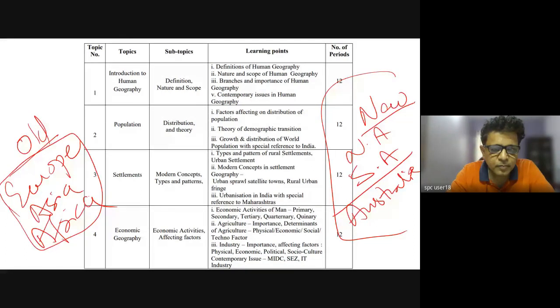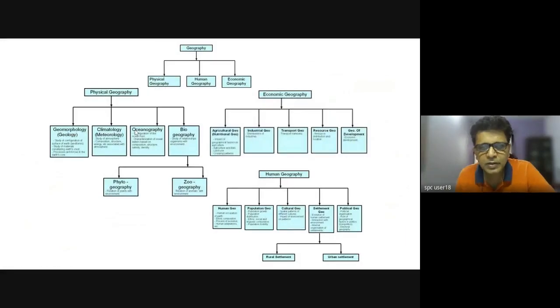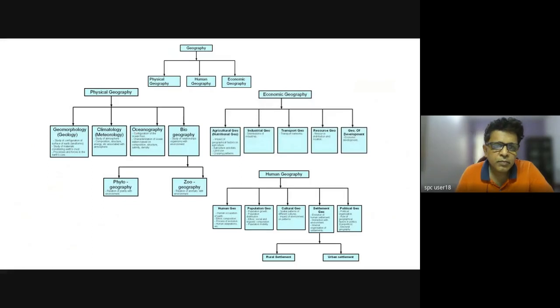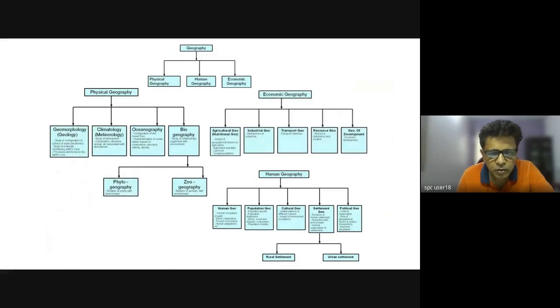From population we will move into settlements, and of course how population and settlements materialize into economic geography — the two major parts being agriculture and industry. Before we go ahead, I want to present two clips. One we saw yesterday — the second part about an ice age around 20,000 to 25,000 years ago.